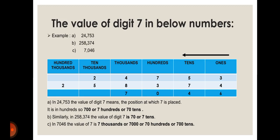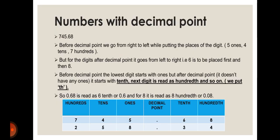Examiners can ask this in confusing ways. In 258,374, the digit seven is in the tens column, so its value is seventy, or seven tens. In 7046, seven is in the thousands column, so it is seven thousand in numbers, or seven thousands in words, or seventy hundreds (since hundred has two zeros, seventy times one hundred is seven thousand), or seven hundred tens (seven hundred times ten equals seven thousand).